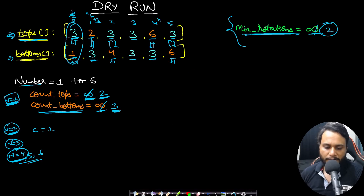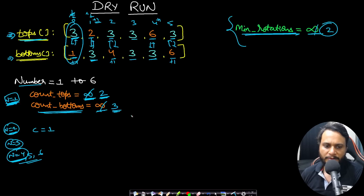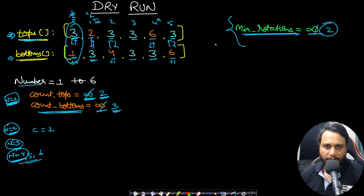Time complexity is O(6×n), which we treat as O(n) since we iterate through the array six times. Space complexity is O(1) — we use only a constant number of variables.